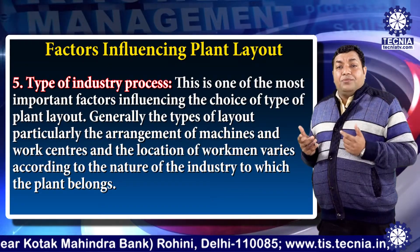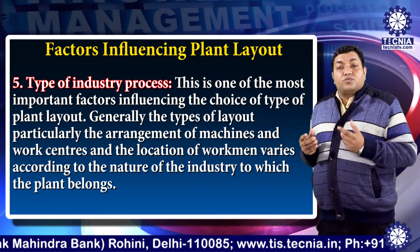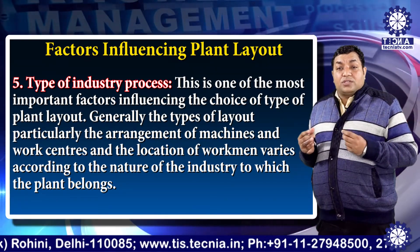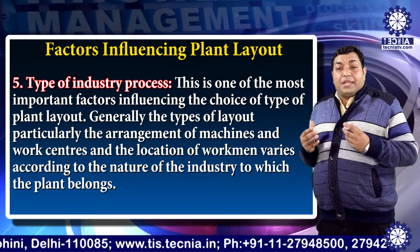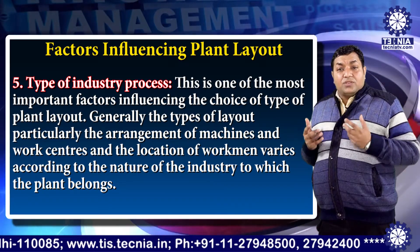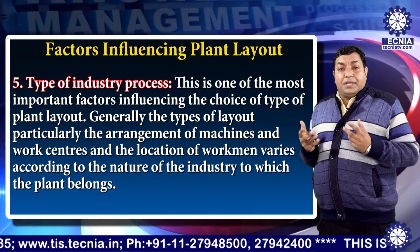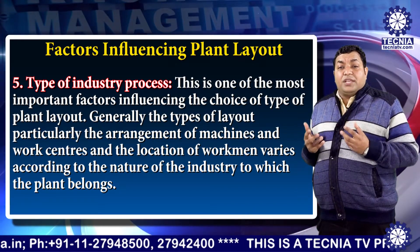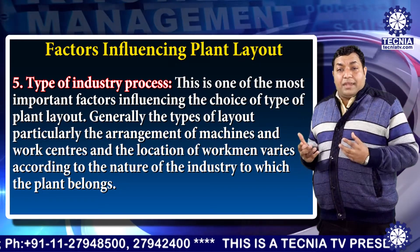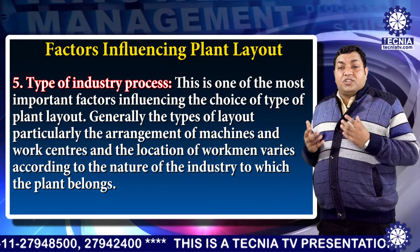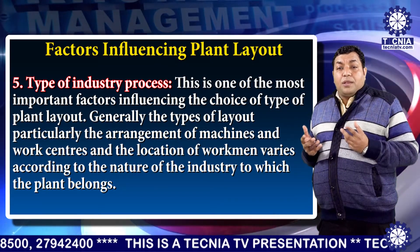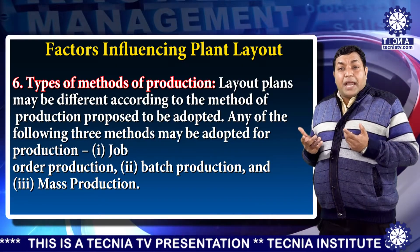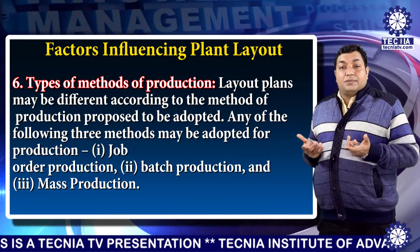The fifth factor is the type of industry process. This is one of the most important factors which influences the choice of different types of plant layout. Generally, the types of layout, particularly the arrangement of machines and work centers and the location of workmen, varies according to the nature of the industry to which the plant belongs.